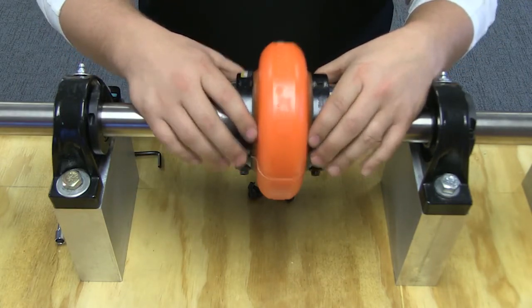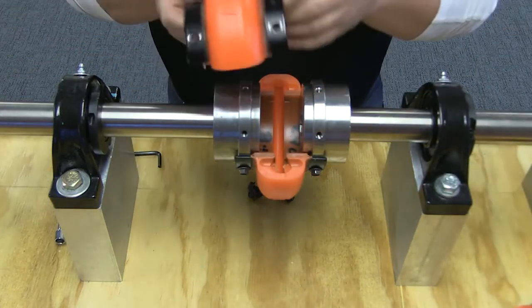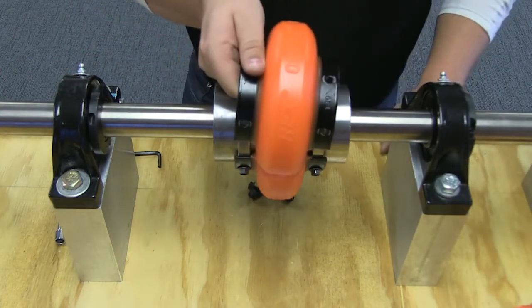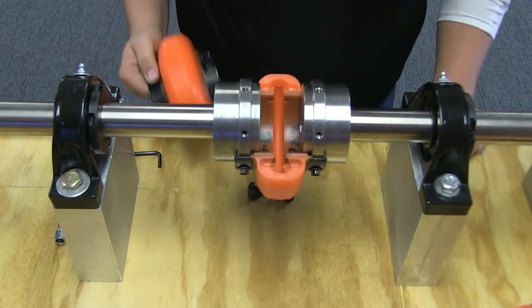Fortunately, the Omega coupling was designed with the replace in place feature, allowing you to replace the failing part of the coupling, the element, without needing to move your hubs or connected equipment.